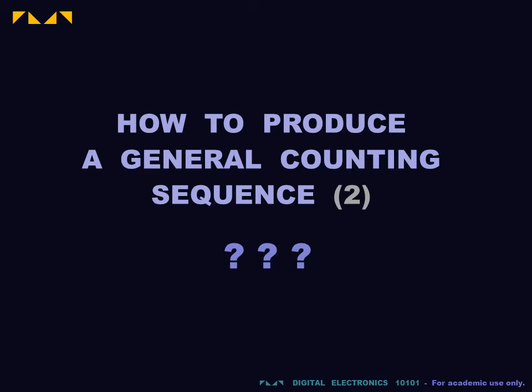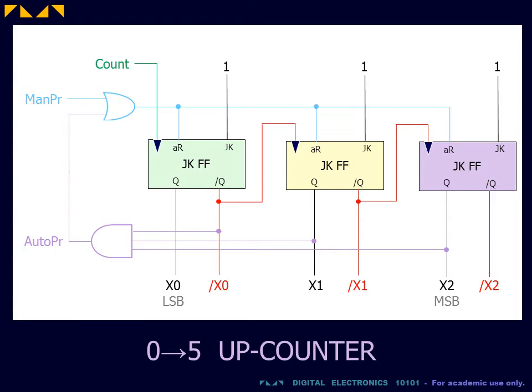We continue our discussion of how to produce a general counting sequence. In the previous video, we modified a 3 flip-flop counter to produce a truncated 0 to 5 counting sequence.